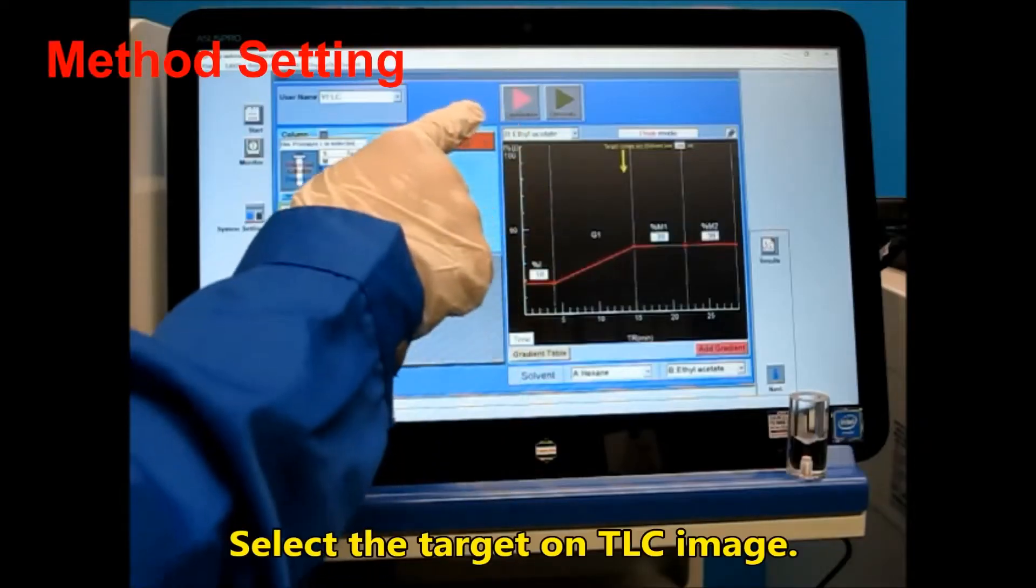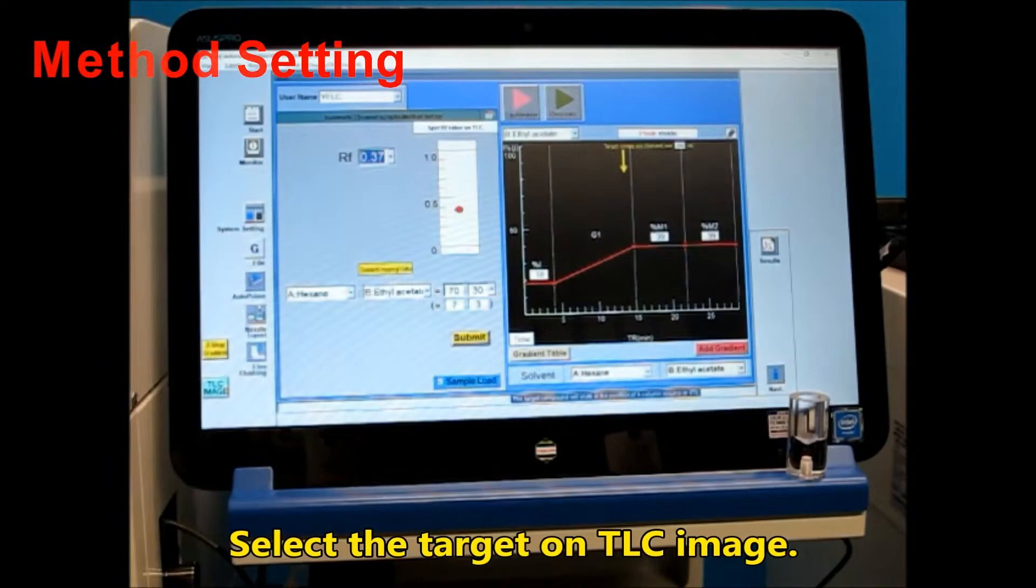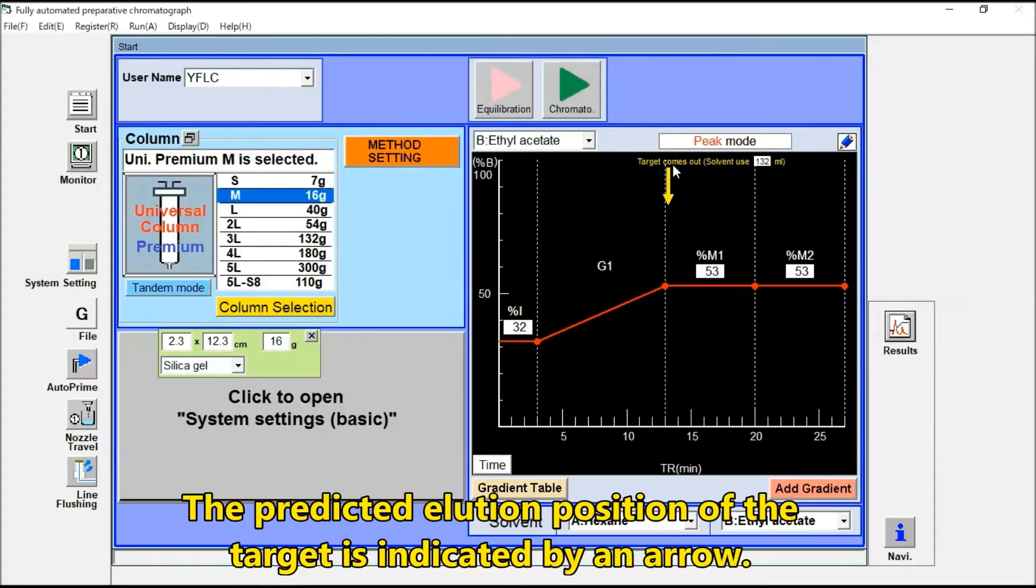The optimum method will be set automatically with the RF gradient, and the predicted elution position of the target will be indicated by the arrow.